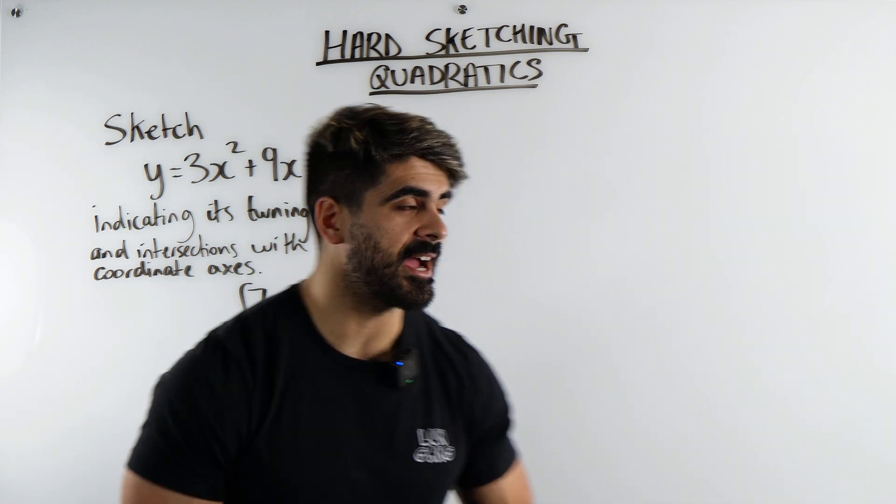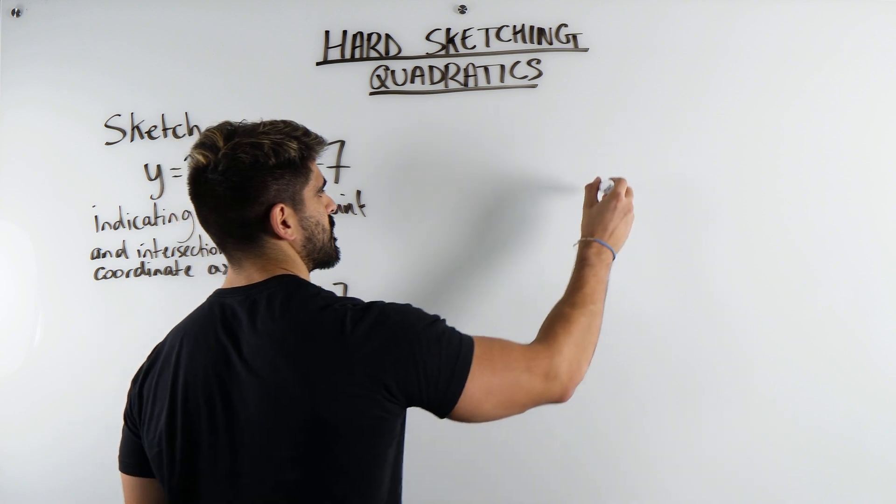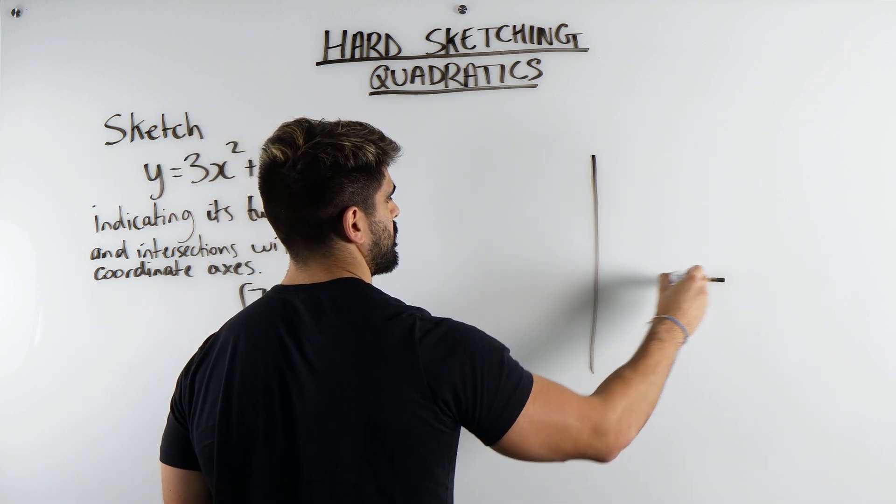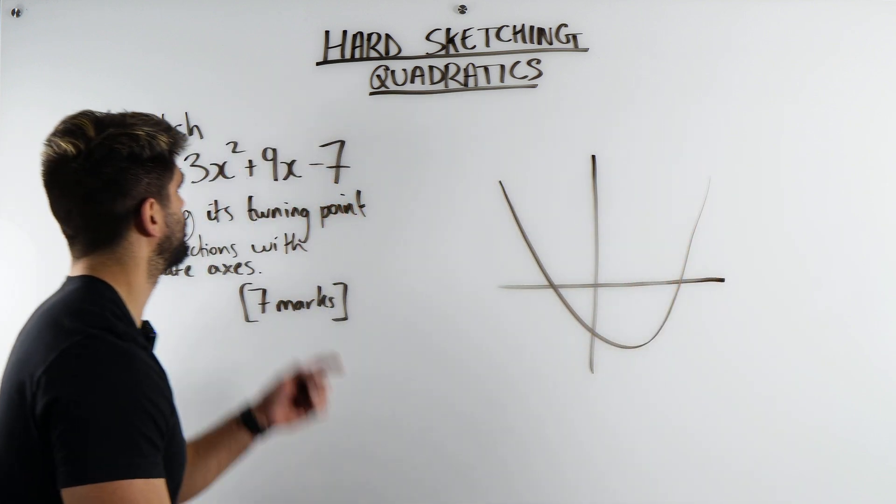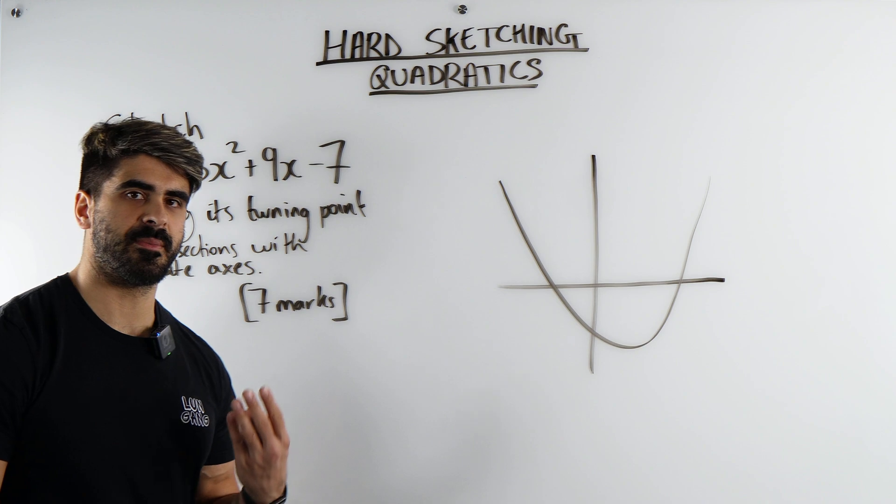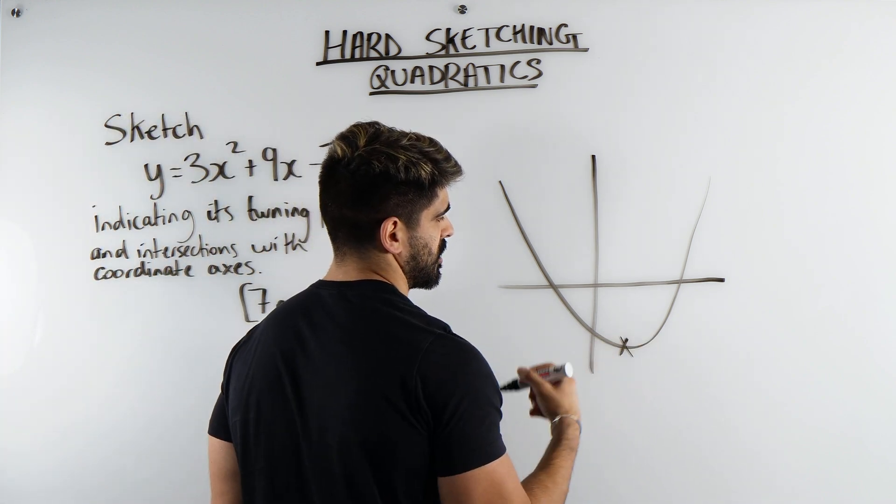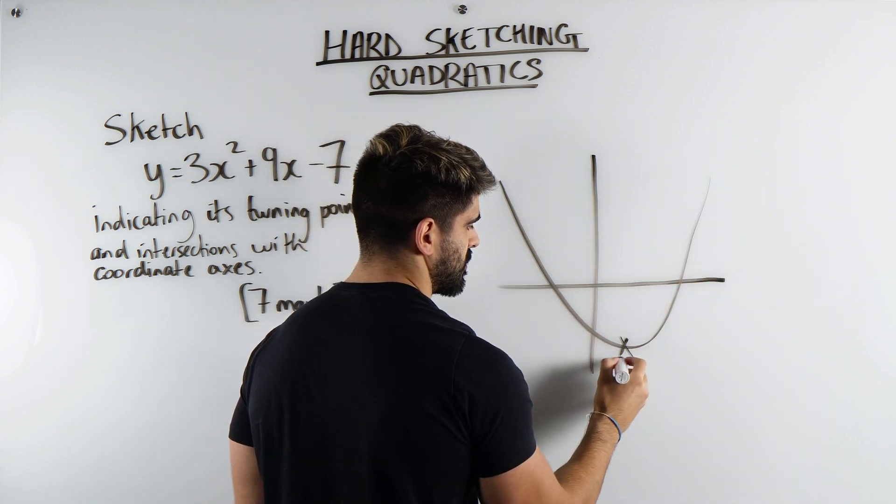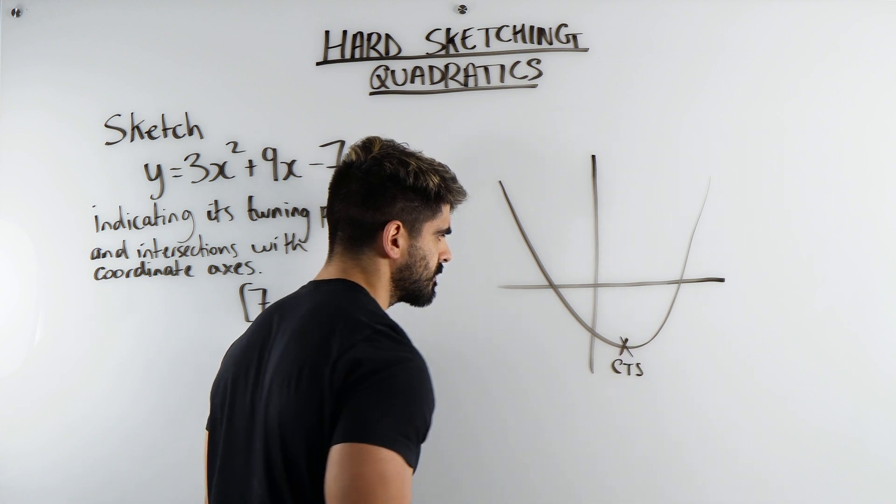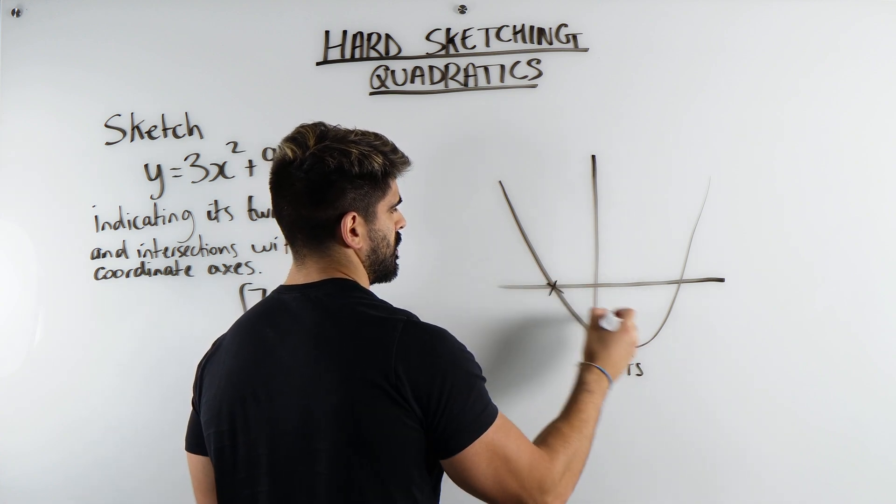So before we get into the algebra behind things, let's just remind ourselves what does a quadratic even look like? A quadratic would look something like this. It's a positive quadratic. So what do we mean by the turning point? We mean the point in which it changes from going down to up. Here, to find this, we would complete the square.